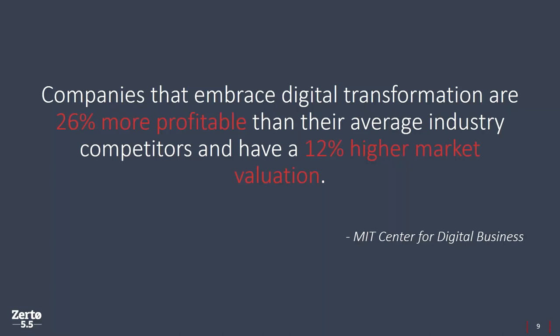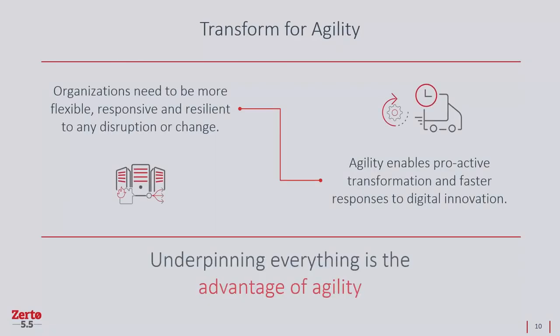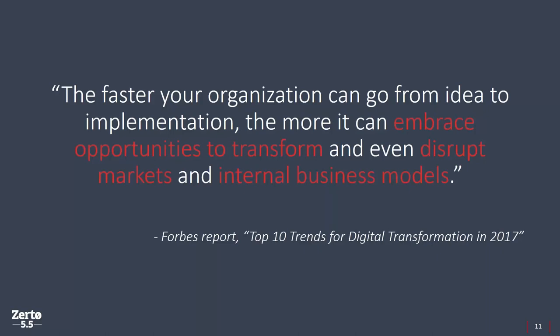The most forward-thinking companies understand that digital transformation is a continuum, so they plan not only for today but also for tomorrow by ensuring IT is agile enough to respond to change as fast as possible. Being agile enables organizations to be proactive in transformation and essentially beat the competition, maximizing the benefits of innovation. As reported by Forbes, more businesses have adopted this future-proof mentality — the faster an organization can go from idea to implementation, the more it can embrace opportunities to transform and disrupt markets.